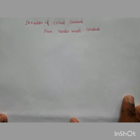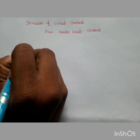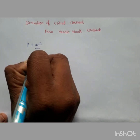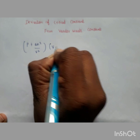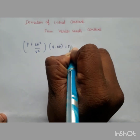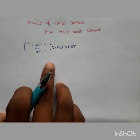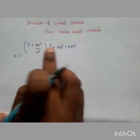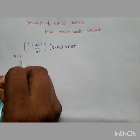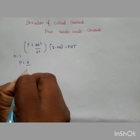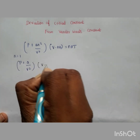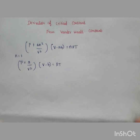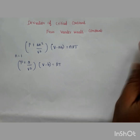We are going to derive them. First, the Van der Waals equation: p plus a·n² divided by v² times (v minus nb) equals nRT. Now we are going to substitute n equals 1, giving p plus a divided by v² times (v minus b) equals RT.